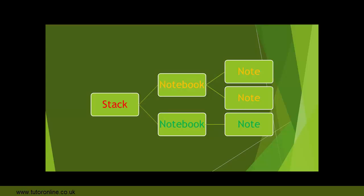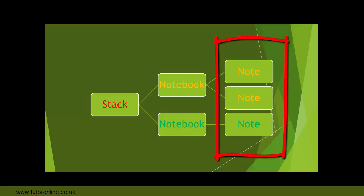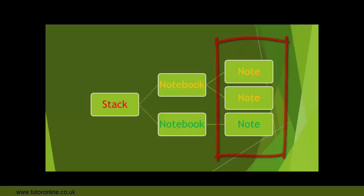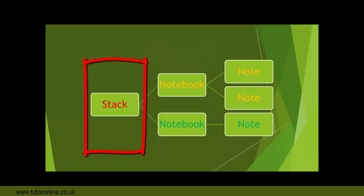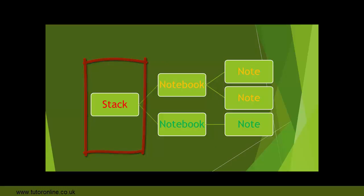At the bottom level in Evernote you have a note — an individual note which you can add all kinds of content to, from text, images, video and audio, etc. Above that we have the notebook where we can add our notes, and above notebooks we have an optional third level called a stack, and a stack can be a series of notebooks.